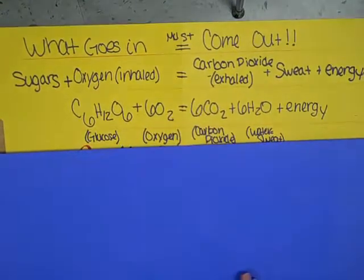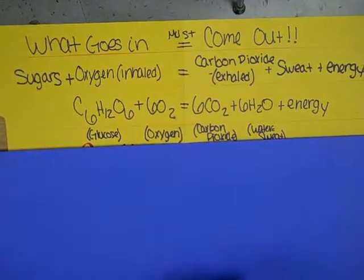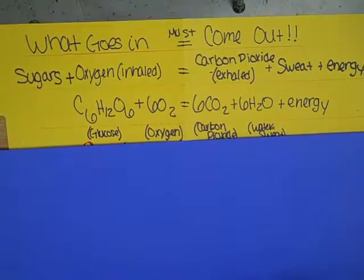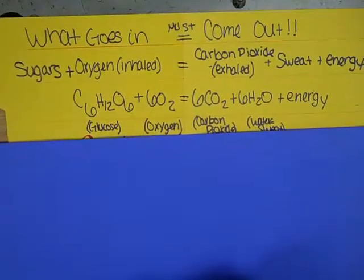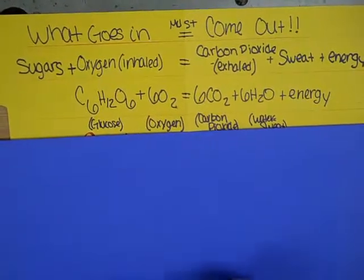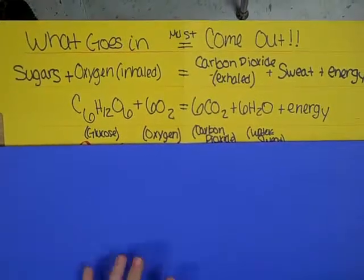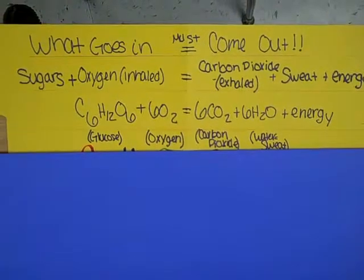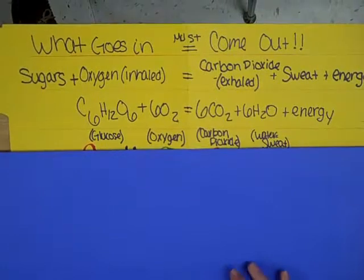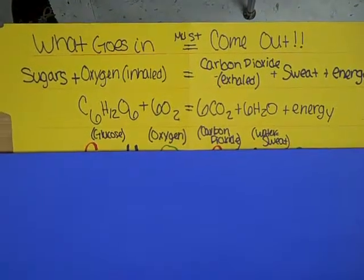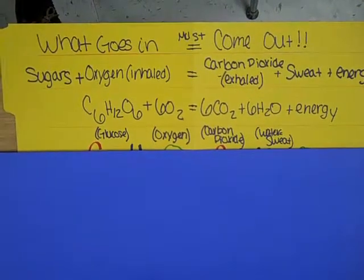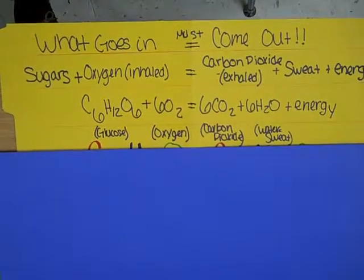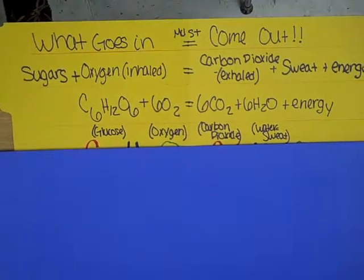The formulas for these compounds are C6H12O6 for glucose, 6O2 for oxygen, 6CO2 for carbon dioxide, 6H2O for water which comes out as sweat, and energy which allows us to move, talk, and think.